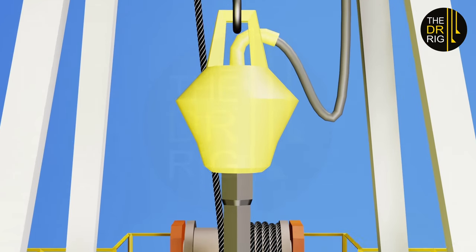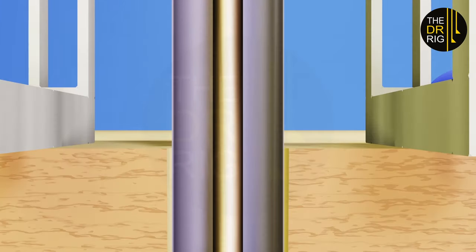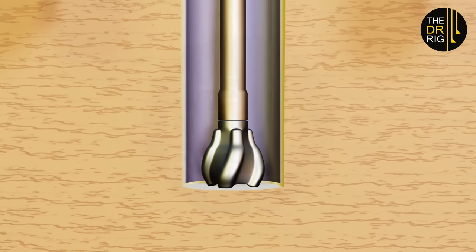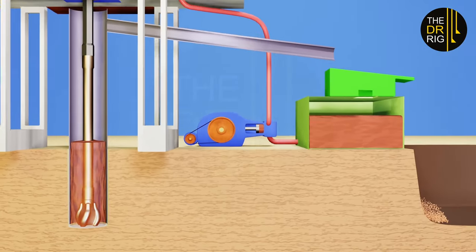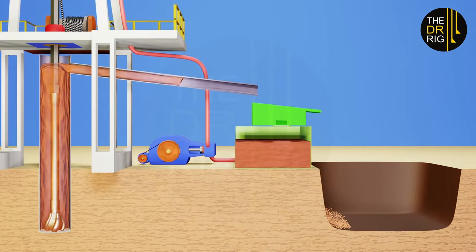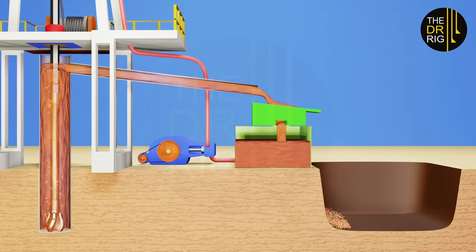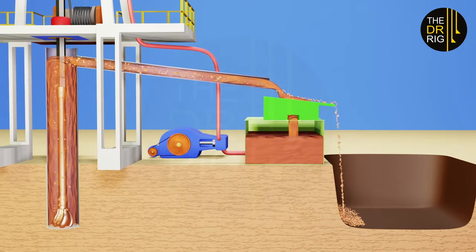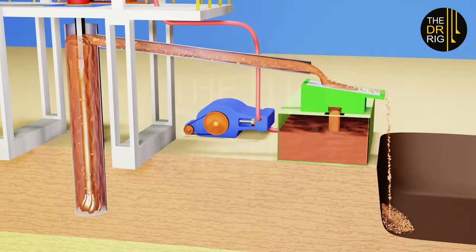The mud is pumped through the drill bit with high pressure and returns to the surface carrying the cuttings through the annulus. The cuttings are separated and removed by solid control equipment and the mud is pumped again in the circulation system.